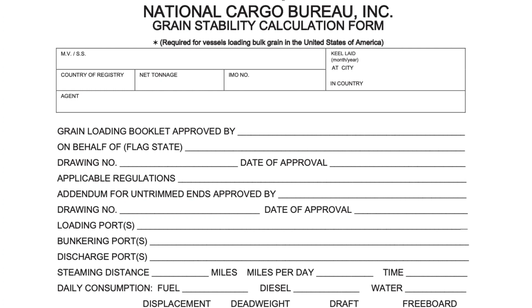This is done to fulfill the requirements of the International Grain Code, whereby the ship shall satisfy the grain stability criteria during all stages of the voyage and also before the start of the voyage. This ensures due diligence at the terminal that the ship was loaded with grain and trimmed in accordance with the requirements of the International Grain Code.